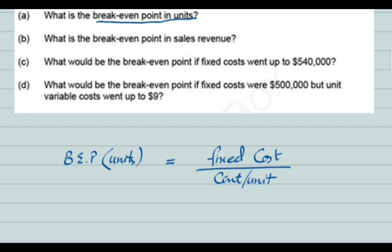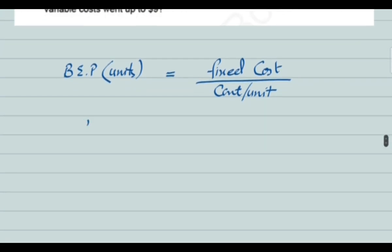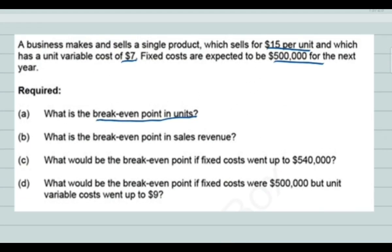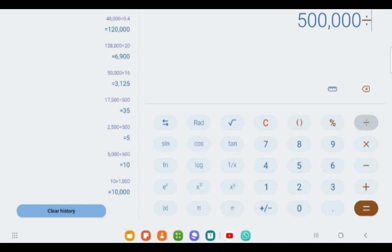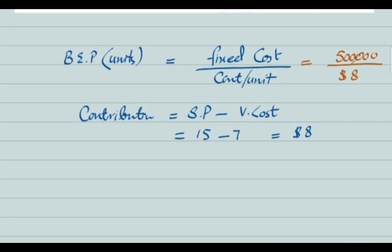We need to calculate contribution per unit. Contribution per unit is sale price per unit minus variable cost per unit. In this question, the sale price is $15 and variable cost is $7, so contribution is $8 per unit. Applying the formula: fixed cost of $500,000 divided by contribution per unit of $8 gives us a break-even point of 62,500 units.